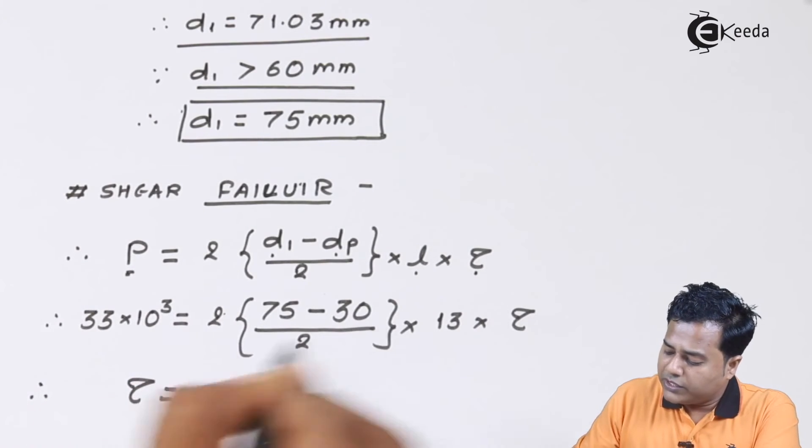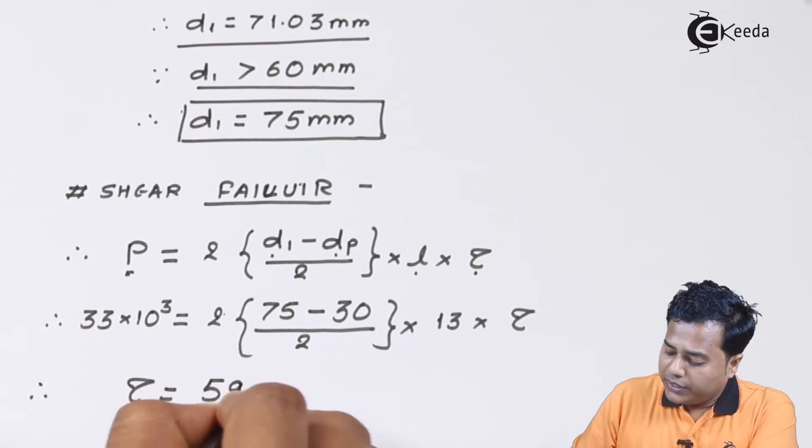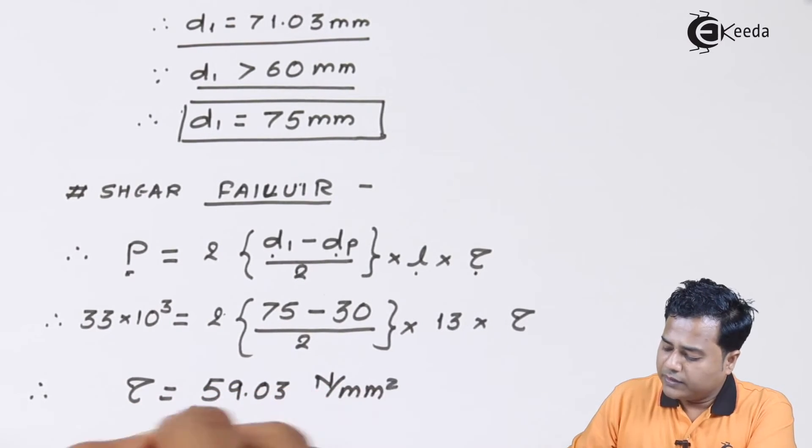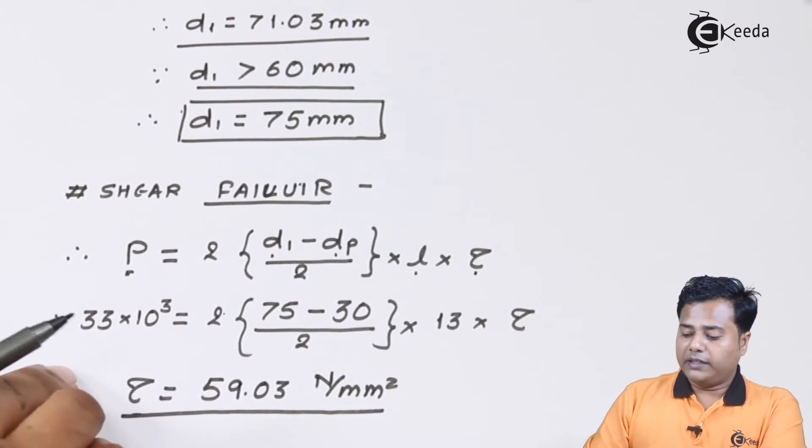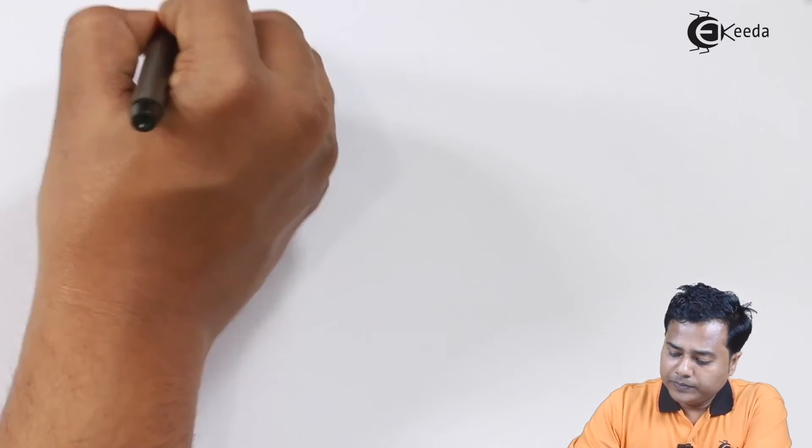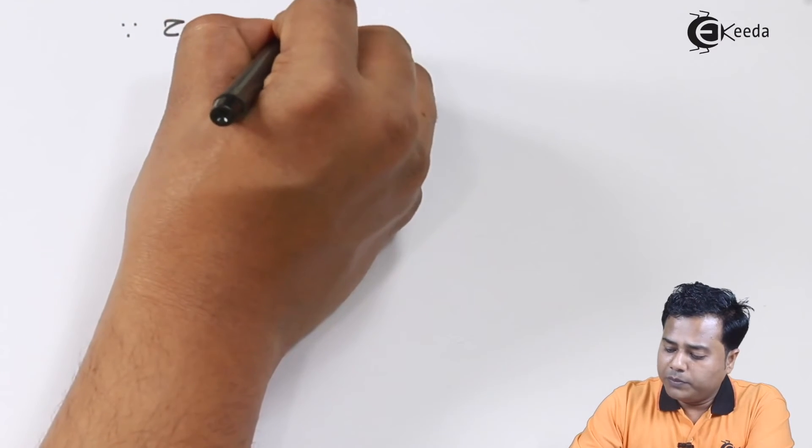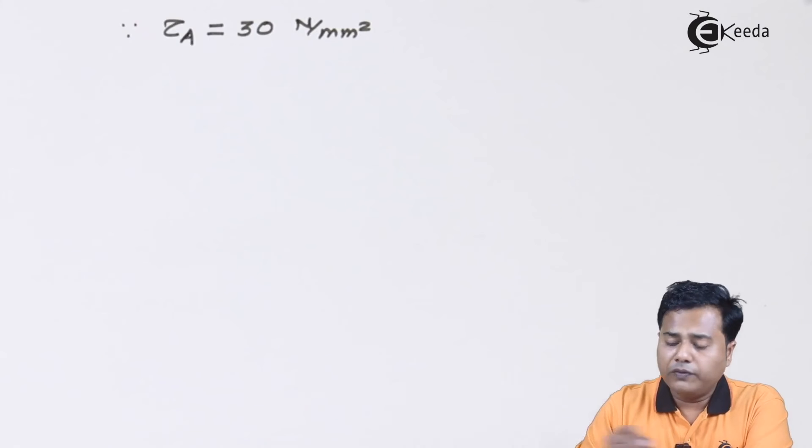The value of τ I get is 59.03 newton per millimeter square. Somehow the value that we already have, the allowable value that we already have, is different than the value we had found out, which was 30 newton per millimeter square. This was the allowable value of τ.